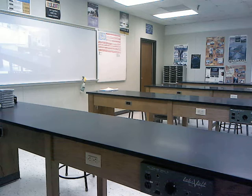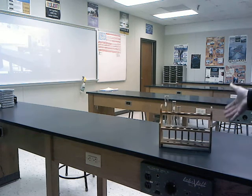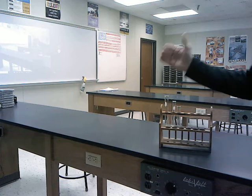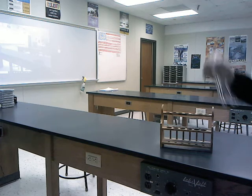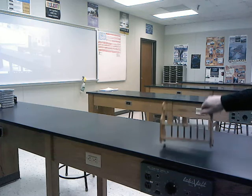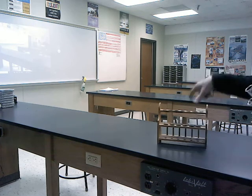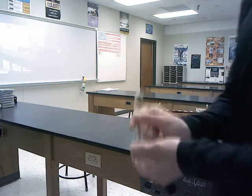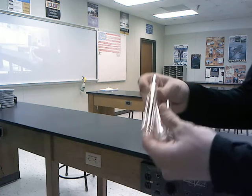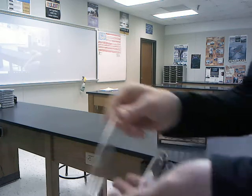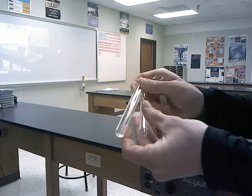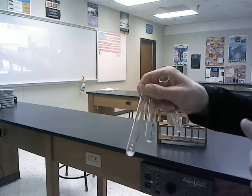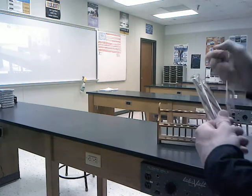We also have a test tube rack. The rack itself is a wooden base — sometimes we have metal ones — and what it does is allow test tubes to be held upright without us physically holding them. What I just pulled out of the test tube rack are test tubes. Test tubes are normally a glass tube and come in a variety of sizes. They're useful because they can contain small quantities of chemicals used in our experiments.